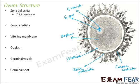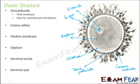Zona pellucida is a thick membrane. It exists for some time post-fertilization. Once fertilization is done — that is, once the fusion between the male and female gametes has taken place — a thick membrane is formed outside the fertilized ovum. This zona pellucida layer is like an outer protective layer; it actually protects the contents inside.